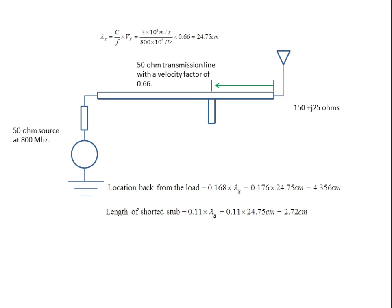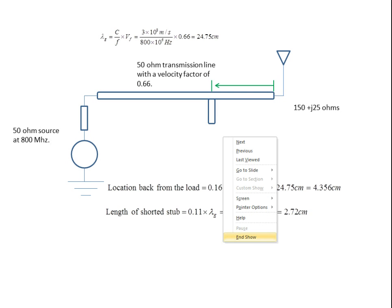So that's the implementation of a shorted stub for a narrowband match. Thank you.